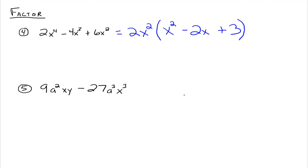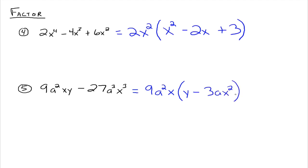When there are variables, you can factor out the one with the smallest exponent, but that means there has to be a variable in every term. Look at number 5: we have 9 and 27, so we can take a 9 out. We have a squared and a cubed, so we take out a squared — the smallest exponent. We have x and x cubed, so we take out x. But we have a y in one term and no y in the other, so there's no y we can take out. The greatest common factor is 9a squared x, and factoring that out leaves y minus 3ax squared.